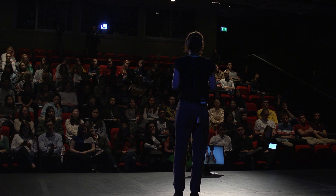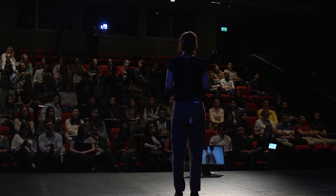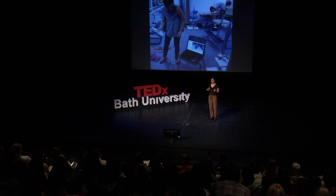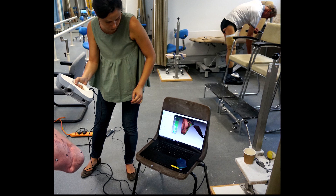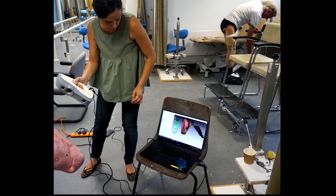My research group decided to think about possible solutions for this problem. We decided to use 3D scanners to monitor how the stump of amputees changes after amputation. Here I am taking pictures of a stump using a 3D scanner — you can see the image of the stump displayed on the laptop screen.